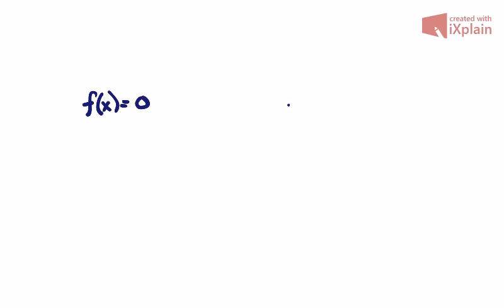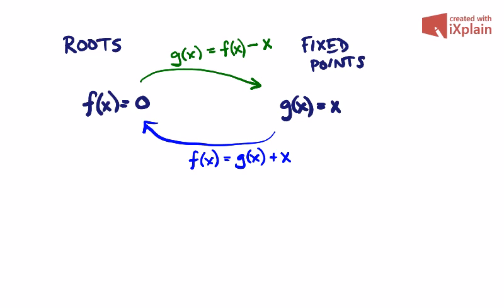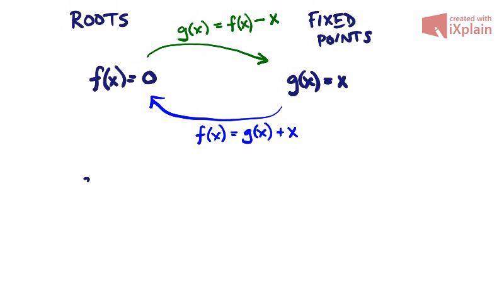We're talking about finding roots of a function, or values where the function is zero. There's a related problem called the fixed-point problem, where we try to find a value of x such that g of x equals x. If you give me an f for a root-finding problem, I can turn it into a g for the fixed-point problem, and vice versa. So these two problems are very closely linked — in fact, they're equivalent.